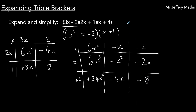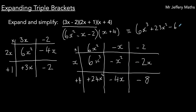Then all I need to do is simplify the terms in my multiplication grid. Collecting together 6x cubed with any other x cubed terms — which in this case I don't have — so I've got 6x cubed. Then my x squared terms simplify to 23x squared. The x terms simplify to negative 6x, and then minus 8.